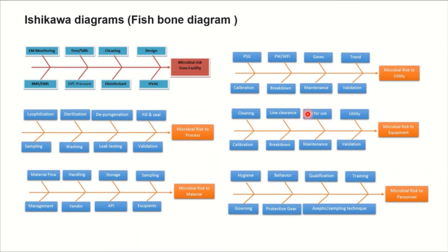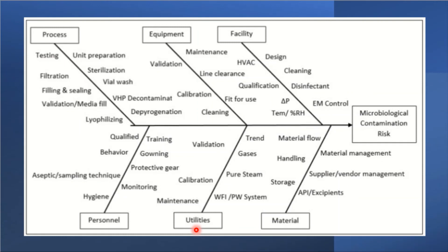Line clearance — reviewing all machines before starting your process and ensuring no earlier product remnants are present — is also an important factor. Whenever you are trying to split the process in the fishbone diagram, don't hesitate to write all components and expand the analysis broadly, placing all relevant components to understand and analyze the microbial contamination links.